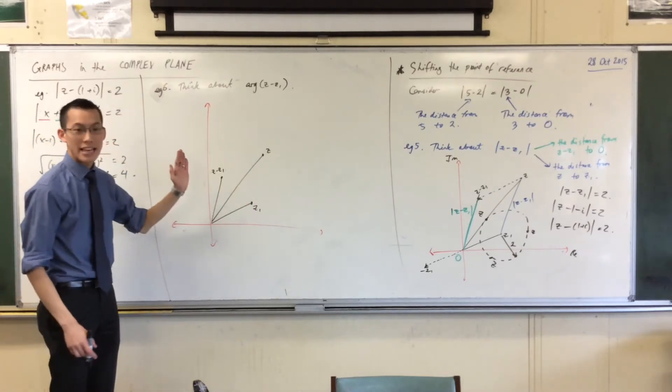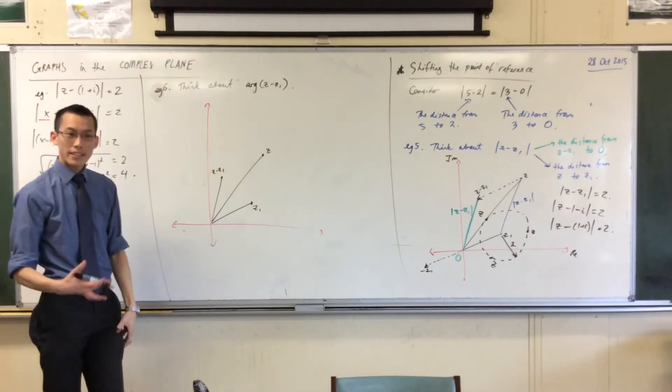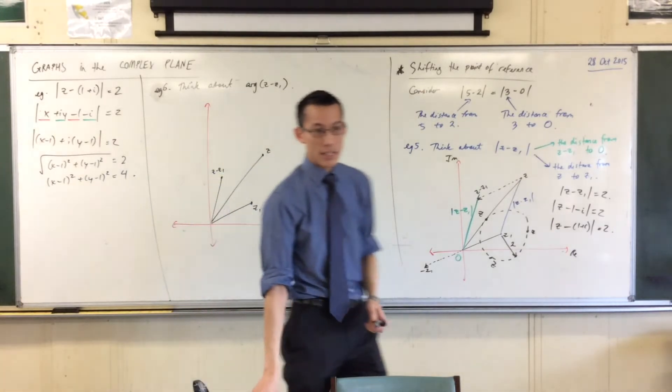So I've got my z, z1, and my z take away z1. So now let's think about where the arguments are in this diagram.